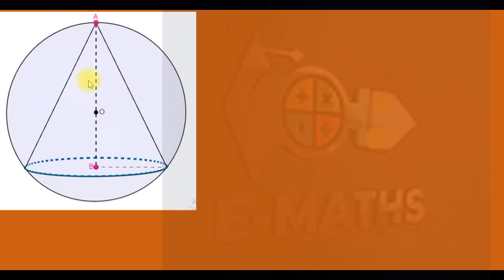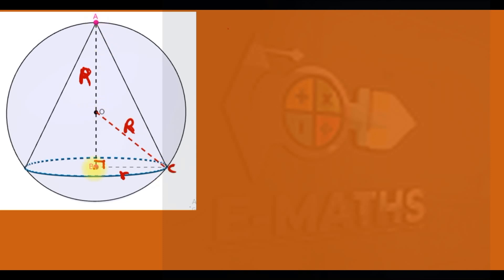We call AO the radius of the sphere, which is big R, and we call BC small r — the radius of the cone. If we pass a line through the center and join O to C, that is also a radius of the sphere, equal to big R. AB is the height of the cone H, so OB equals H minus R.